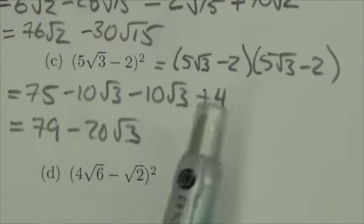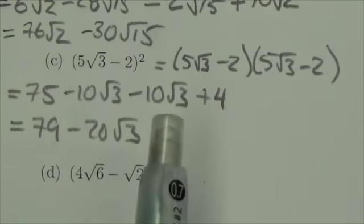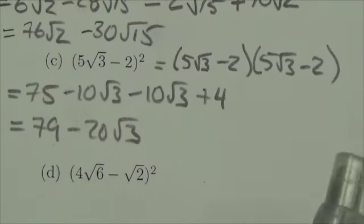Now, if you're not really careful with this, a lot of people are going to want to answer just 79 because they will forget to what we call foil that out, the outer and the inner terms. Please don't forget to do that. Thank you very much.